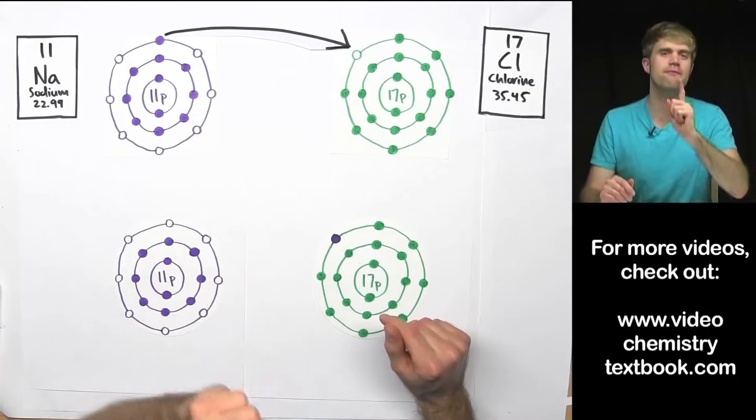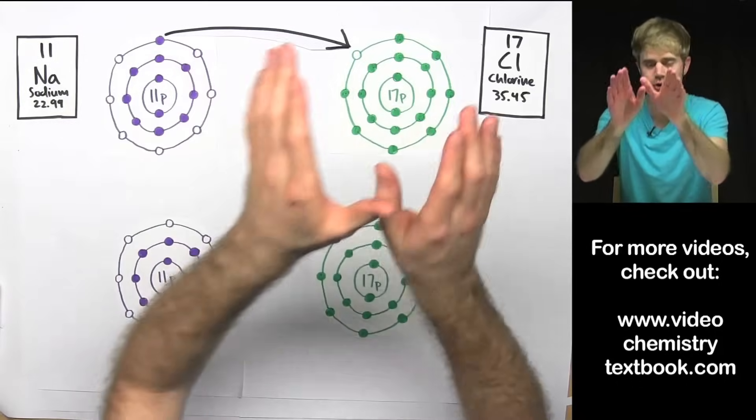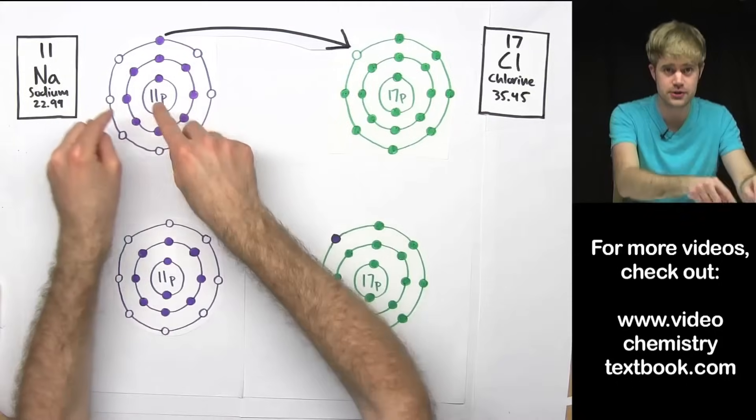Let's keep learning about ionic bonding. The first thing I want to talk about is why electrons move from sodium to chlorine and not from chlorine to sodium.